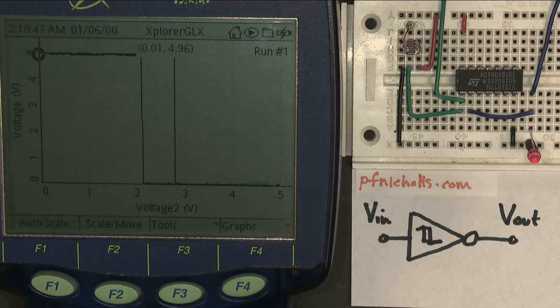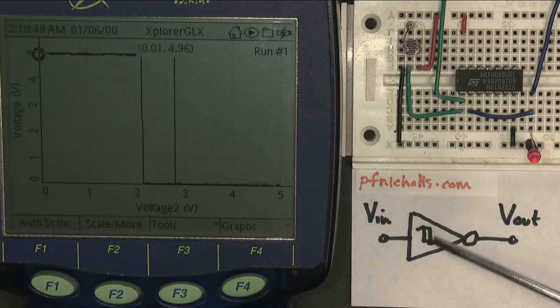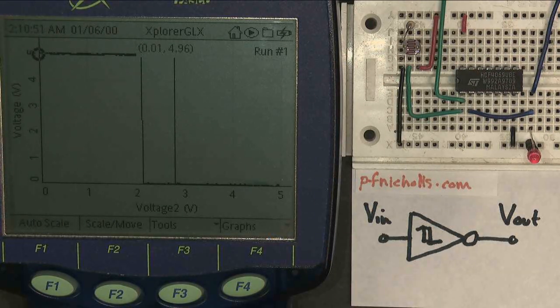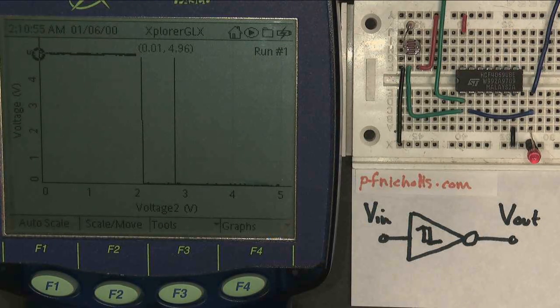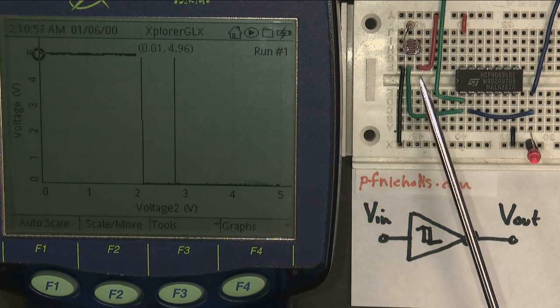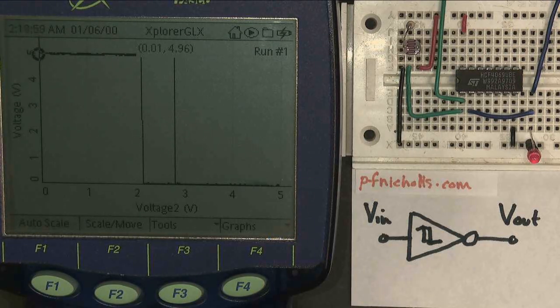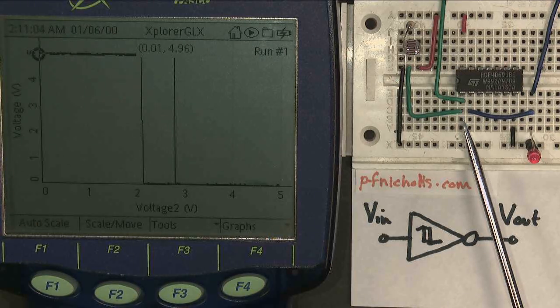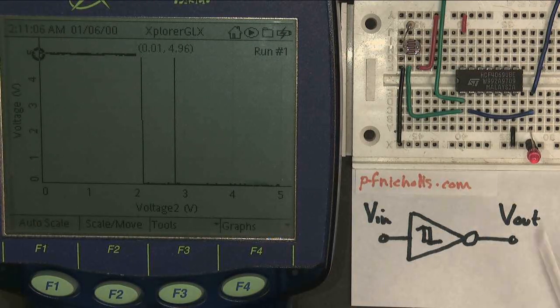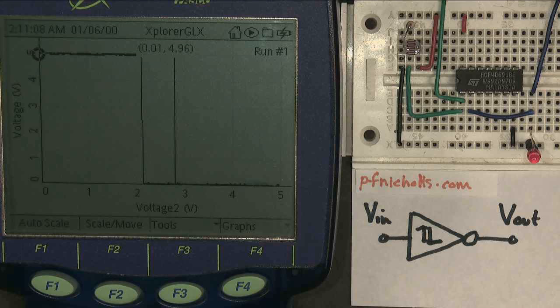One very quick demonstration of why the Schmitt gate is so useful. I've put my regular NOT gate back in here now, the 4069, and I've replaced my potentiometer with a potential divider with an LDR in it. And at the moment, the input is a fairly high voltage, and my output is off.